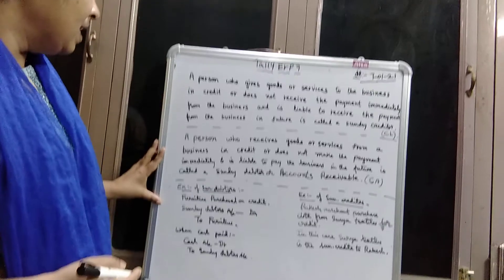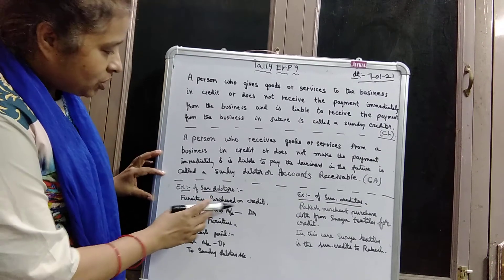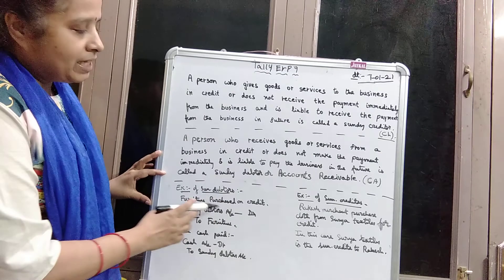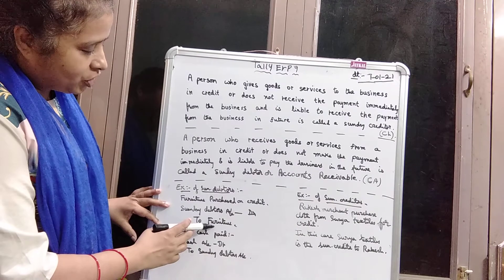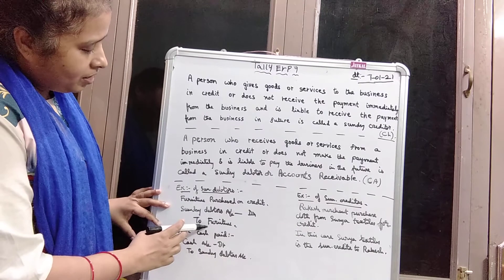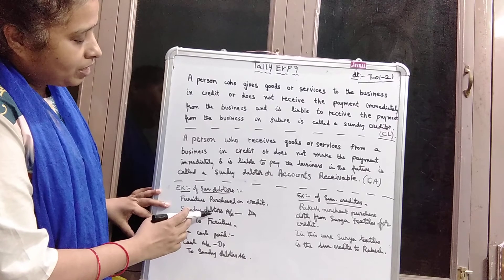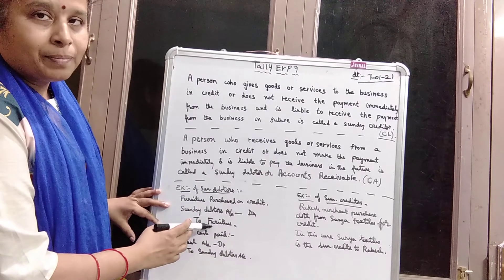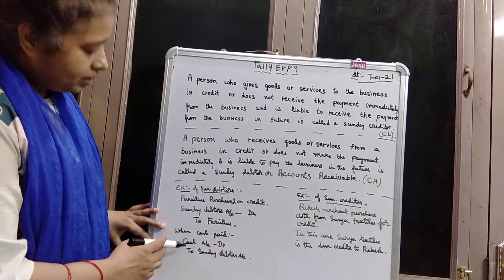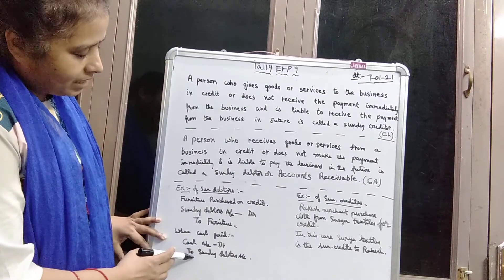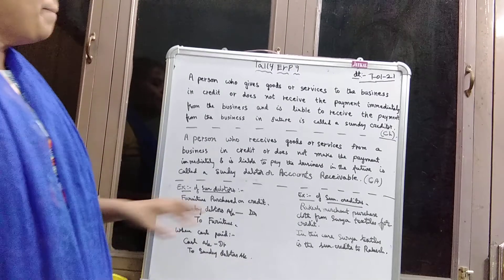For example, for sundry debtors: furniture purchased on credit. If furniture is purchased on credit, the entry will be sundry debtors debit and furniture credit. Sundry debtors will be on the debit side and furniture on the credit side. After paying the amount, cash will be on the debit side and sundry debtors on the credit side.